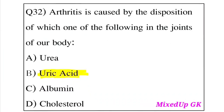Question 32: Arthritis is caused by the deposition of which one of the following in the joints of our body? Option A: Urea. Option B: Uric acid. Option C: Albumin. Option D: Cholesterol. The answer is Option B, Uric acid. Uric acid deposition in joints causes arthritis.